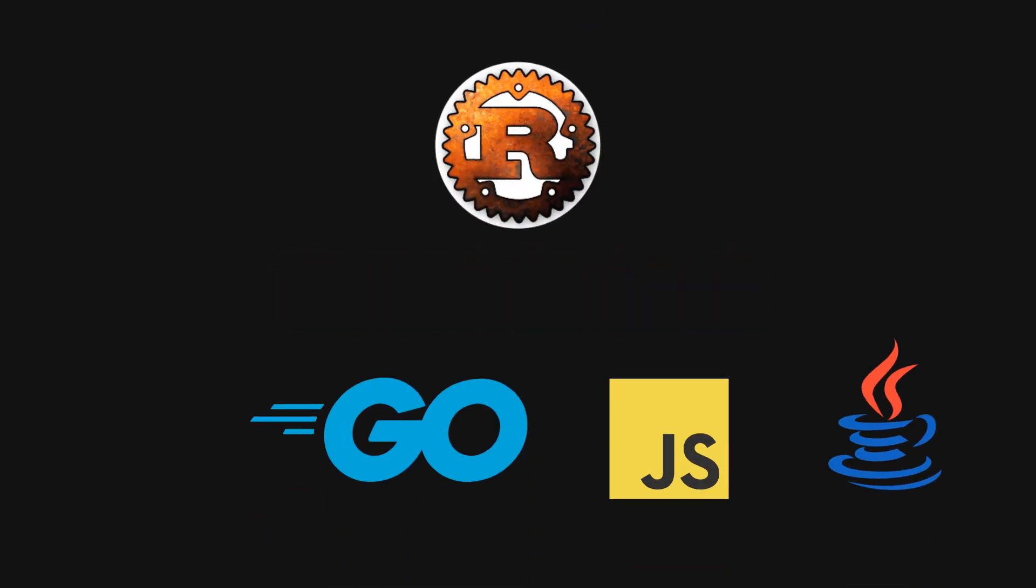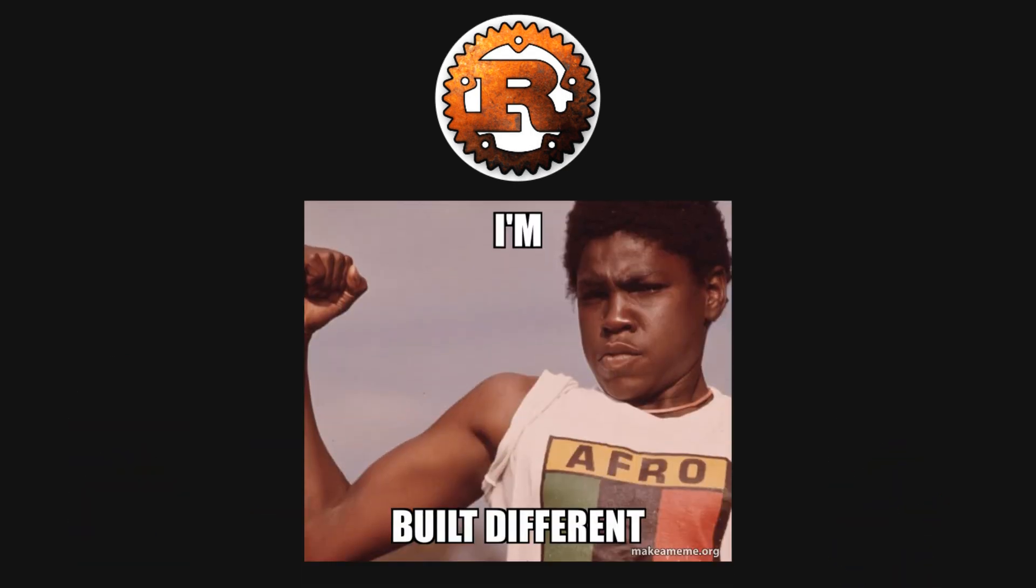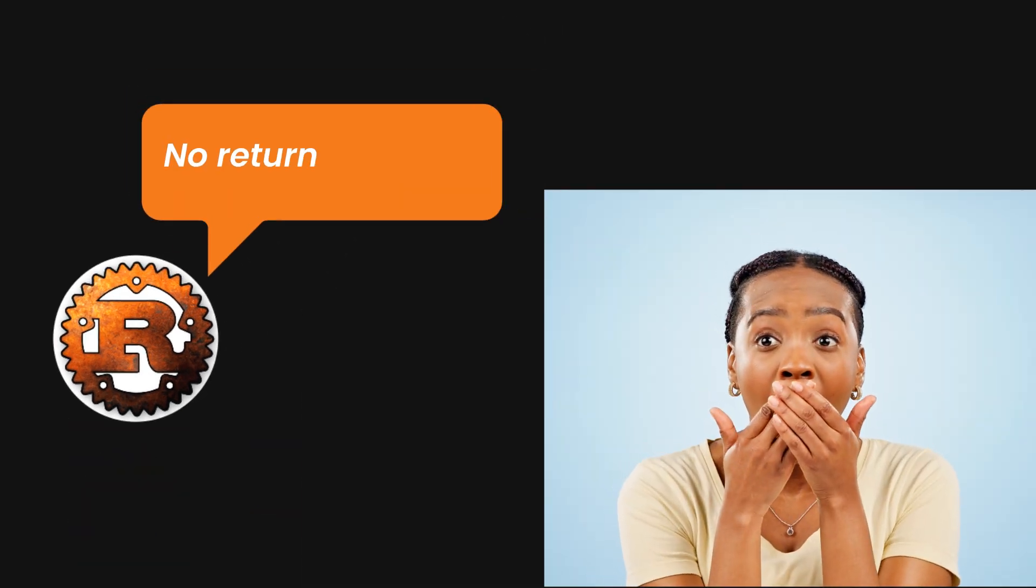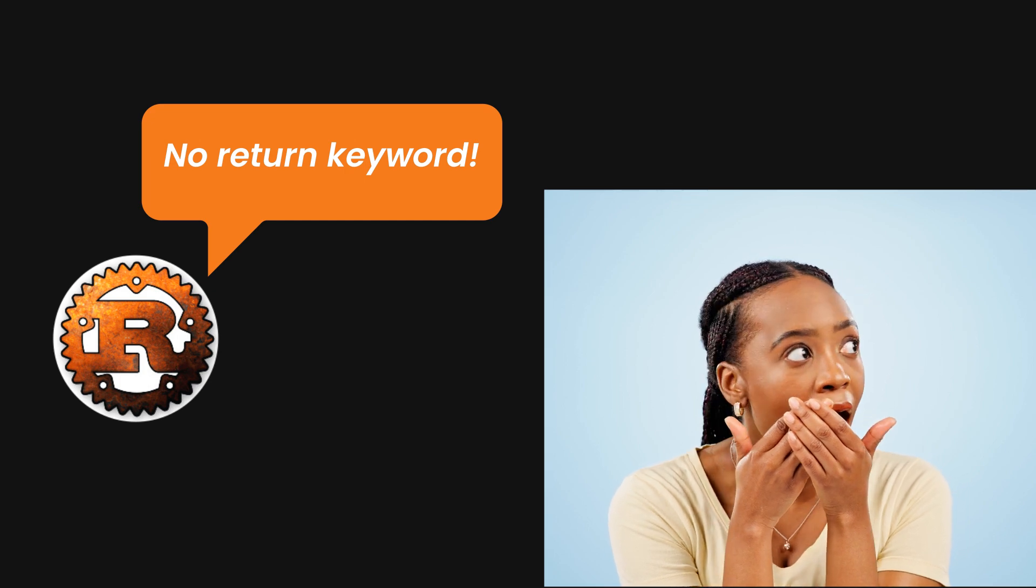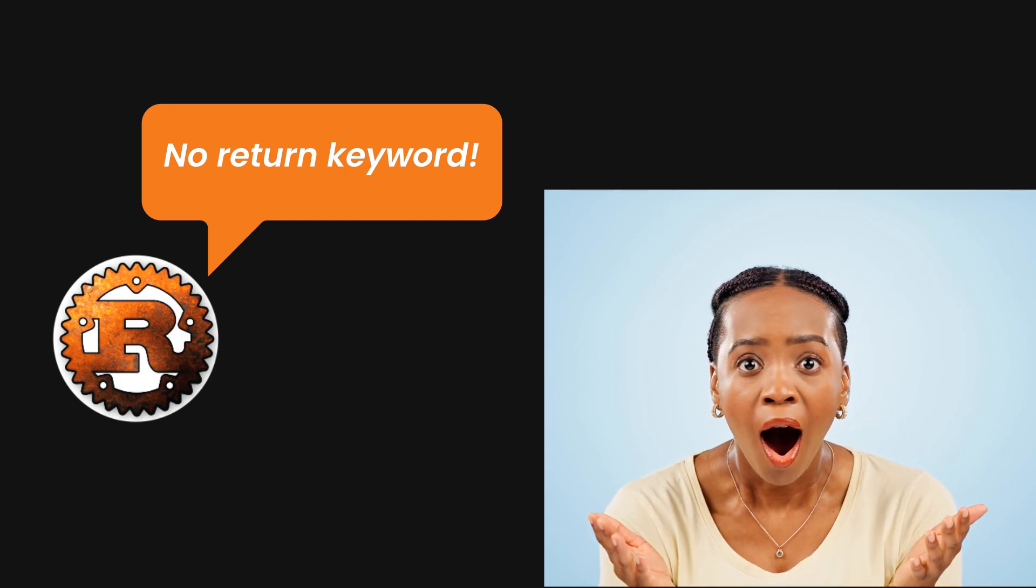Alright, let's move on to functions. Rust functions look familiar if you've used other languages, but Rust does things a bit differently. First off, there's no return keyword in Rust. The last line of your function is the return value if there's no semicolon. Sounds weird right? But it actually makes functions more readable once you get the hang of it.